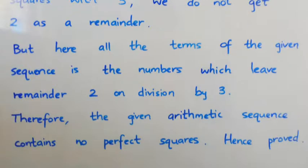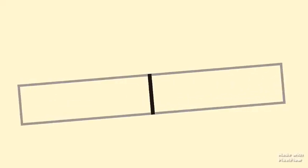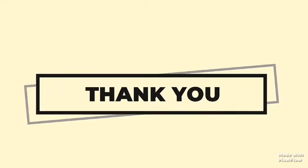But in the given arithmetic sequence, all terms leave remainder 2 on division by 3. Therefore, we can say the given arithmetic sequence contains no perfect squares. Hence proved. Thank you for watching this video.